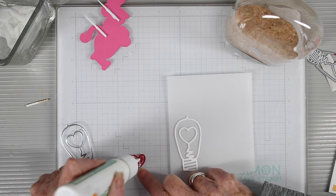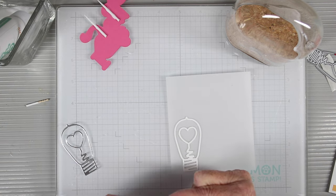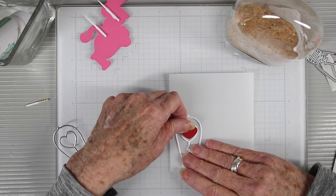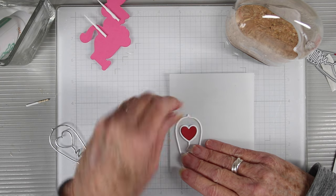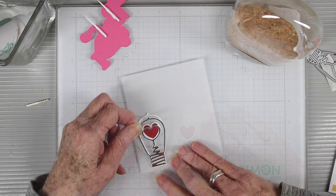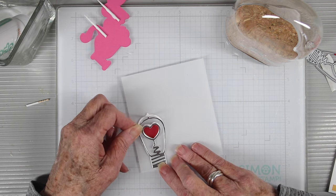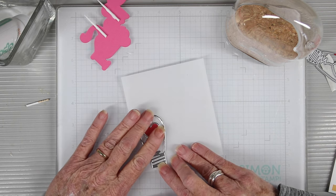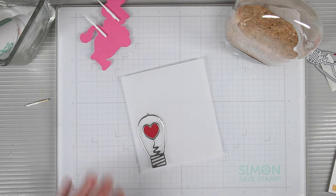Next, I'll be adding the red heart to the center of the bulb, and this is really easy and a great reason to have that vellum sitting behind because I can press this right into the inside without it falling through. And then I can add my final layer of the silver piece on top, and I'll set this aside to let it dry.